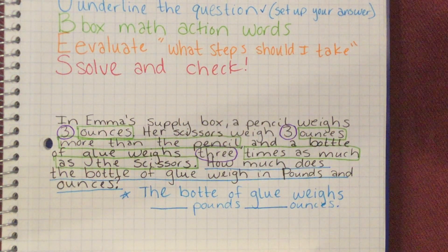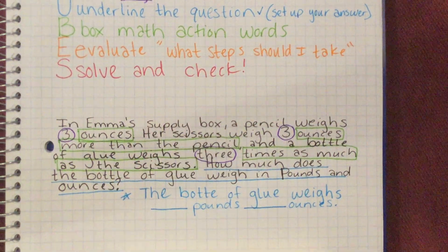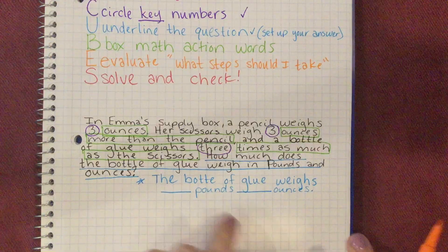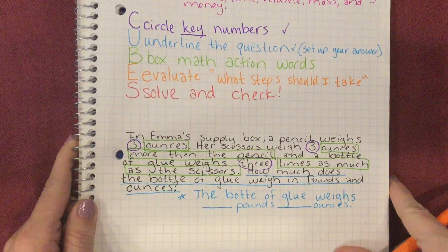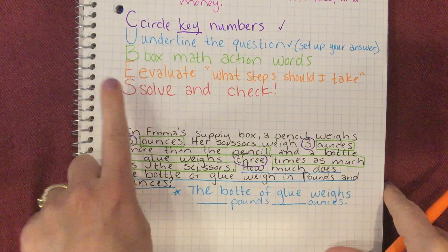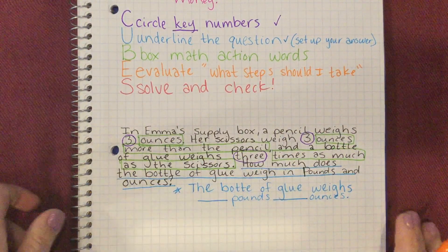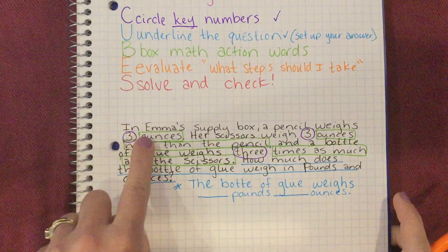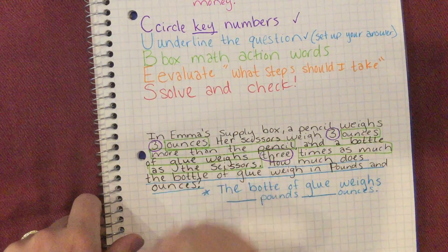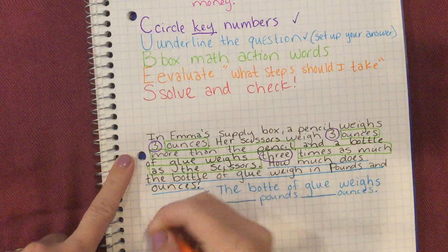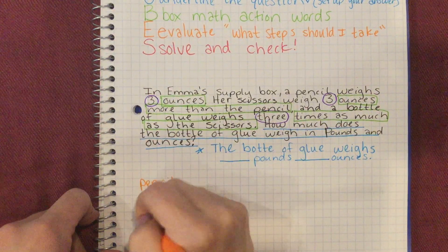Now we need to evaluate. We need to look at the words that we boxed and the numbers that we circled to figure out: what steps should I take? Remember, the steps we're taking are getting us to how much the bottle of glue weighs. Why don't you pause the video, take a moment and ask yourself: what steps should I take? Evaluate this question. Welcome back. We're going to use these math action words and these key numbers to evaluate and figure out our steps. We are going to find how much the pencil weighs, how much the scissors weigh, and that information will lead us to how much the glue weighs.